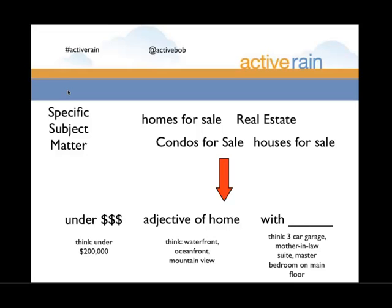Think about adjectives — ways of describing the house: waterfront, oceanfront, mountain view. People do these searches all the time. You'll see it in the PDF we give you, things like 'condos for sale in Seattle with a two-car garage.' In Seattle it's really hard to find a condo with a two-car garage — most come with one parking space. Or 'homes for sale in Phoenix with a master bedroom on the main floor' — that makes sense in Phoenix where a lot of people retire.